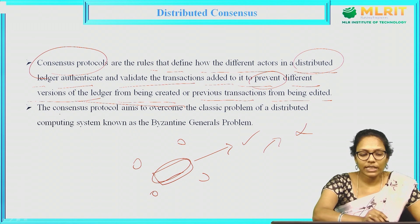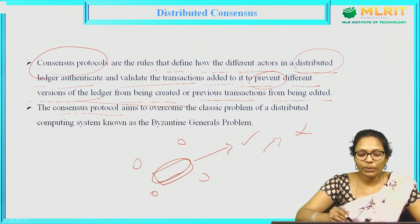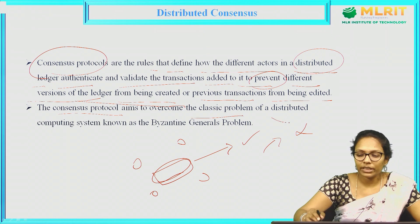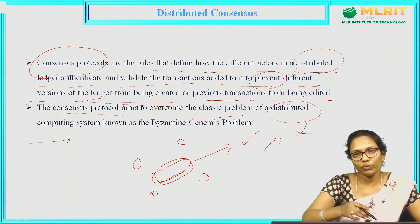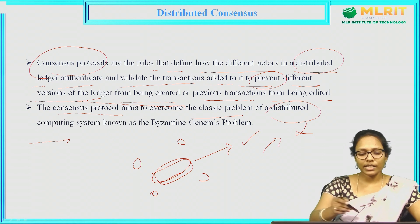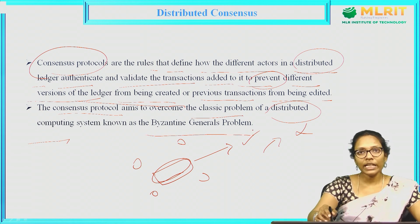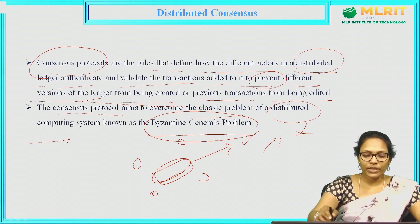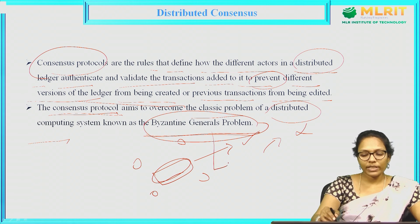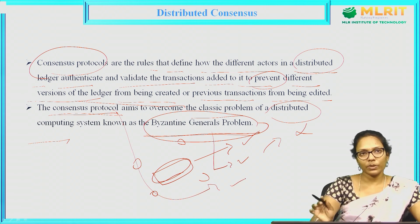Once a transaction is added to the blockchain, we cannot modify it as it is immutable. By using this distributed consensus, upon all the nodes accepting the transaction, the transaction will be added to the blockchain, preventing modification of this ledger. The basic aim of this consensus protocol is to overcome a classic problem in distributed computing — the Byzantine General's problem.